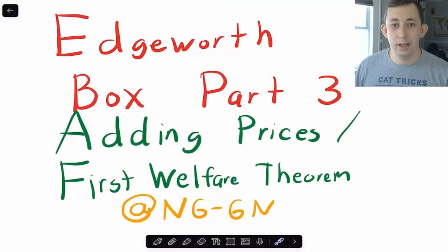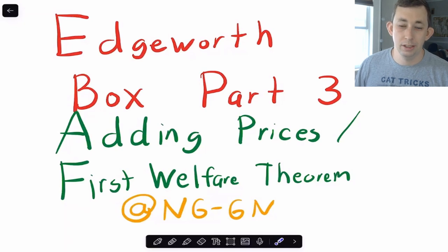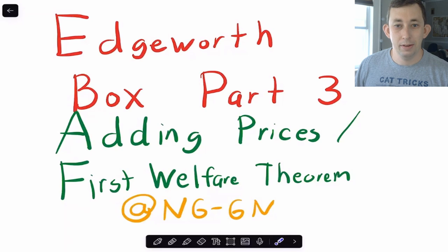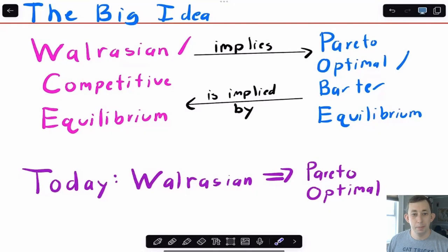Hey guys, today we're talking about the Edgeworth box — this is part three of the series. Today I'm talking about adding prices and the First Welfare Theorem. This is from a question by a user NGGN asking about when a Pareto optimal or barter equilibrium is and is not a Walrasian or competitive equilibrium.